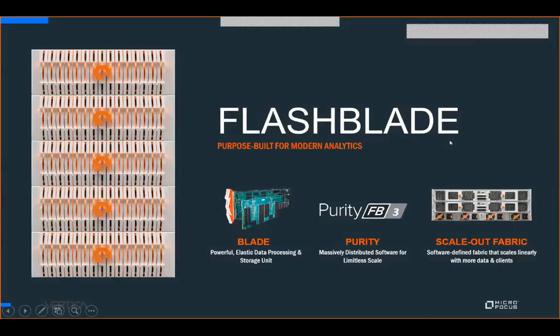FlashBlade is a bladed architecture, as the name implies. We have different chassis with blades that plug into them. Each blade is an independent, powerful data processing and storage unit. It runs our operating system called Purity FB, which manages everything including distribution, durability, and software-defined networking. On the back, there's a scale-out network fabric that takes all node-to-node and blade-to-blade networking off the table, managing it in a software-defined way that delivers load balancing without needing to mess with network switches.